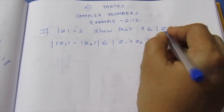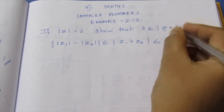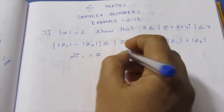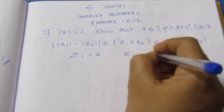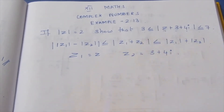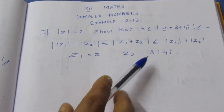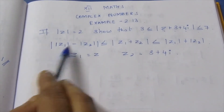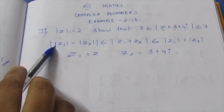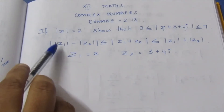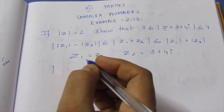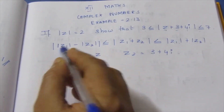Z1 is Z, and Z2 is the second value. So Z1 is equal to Z and Z2 is equal to 3 plus 4i. We will substitute this for the left-hand side.